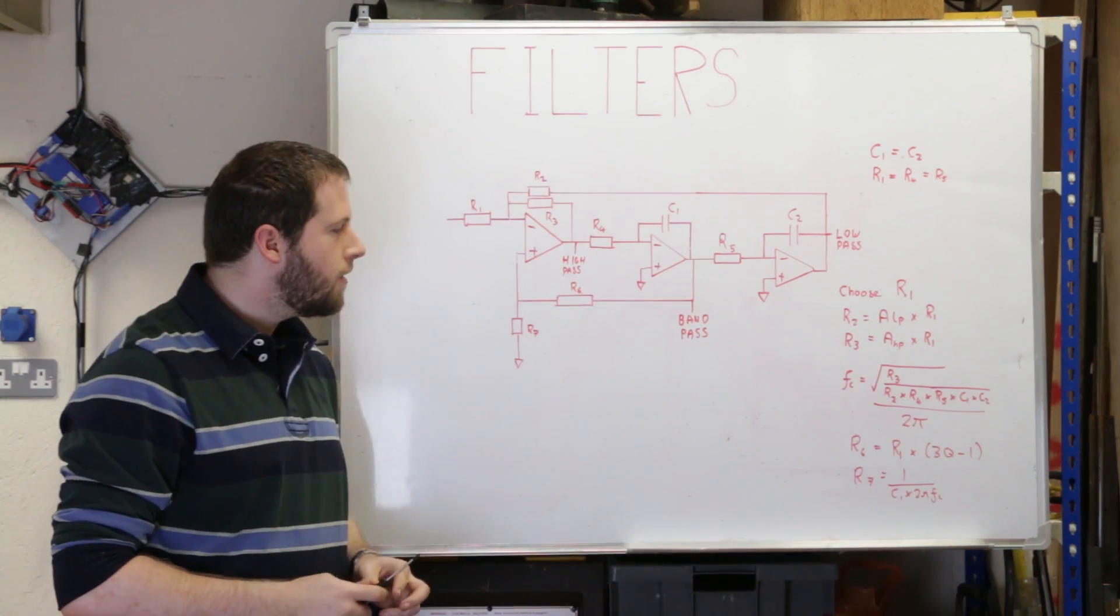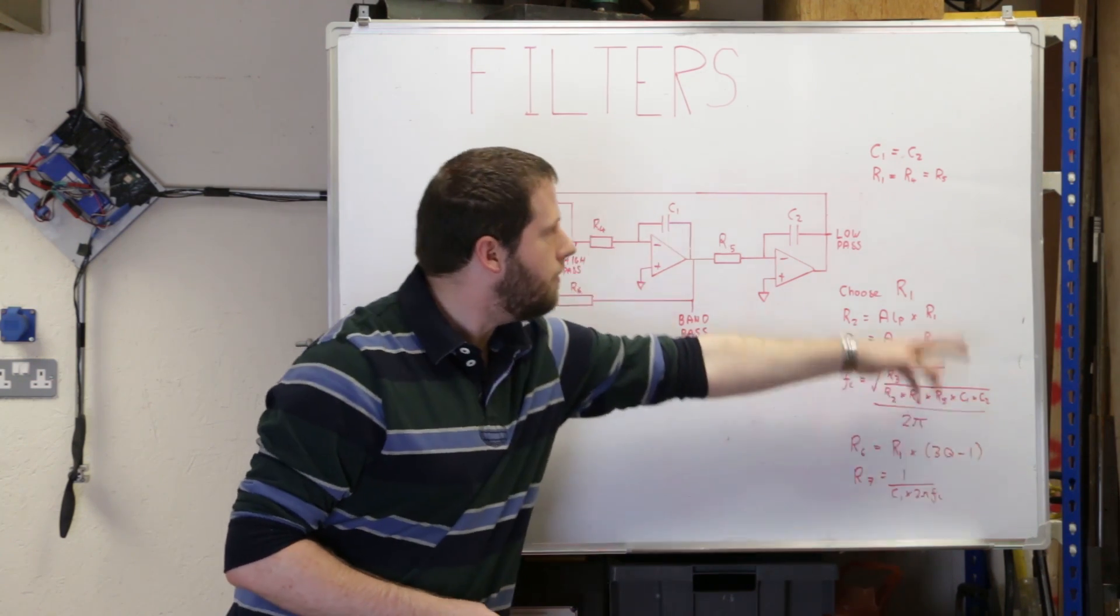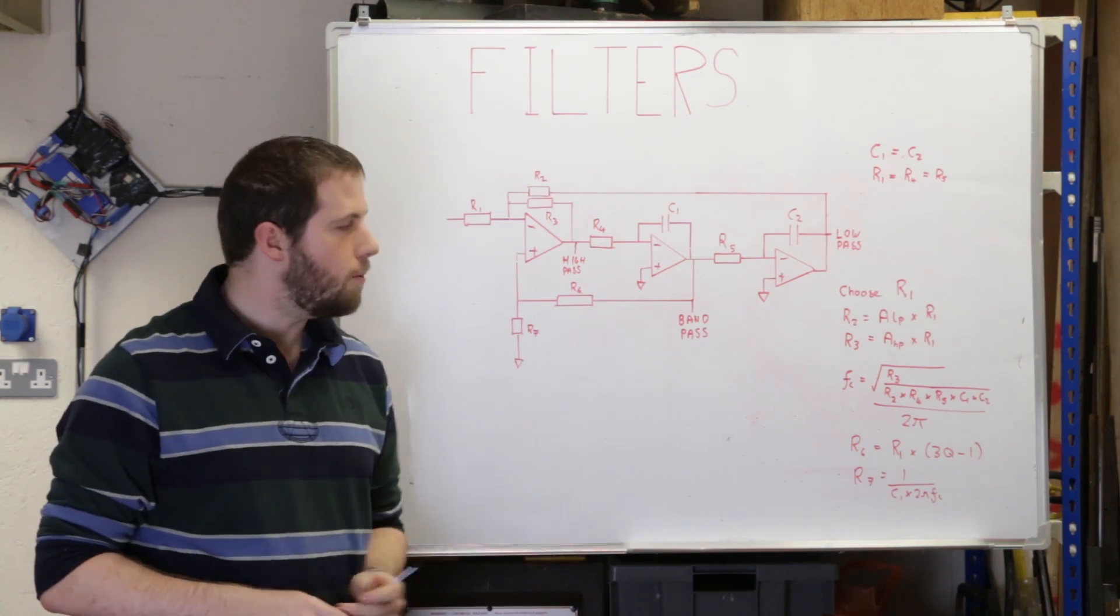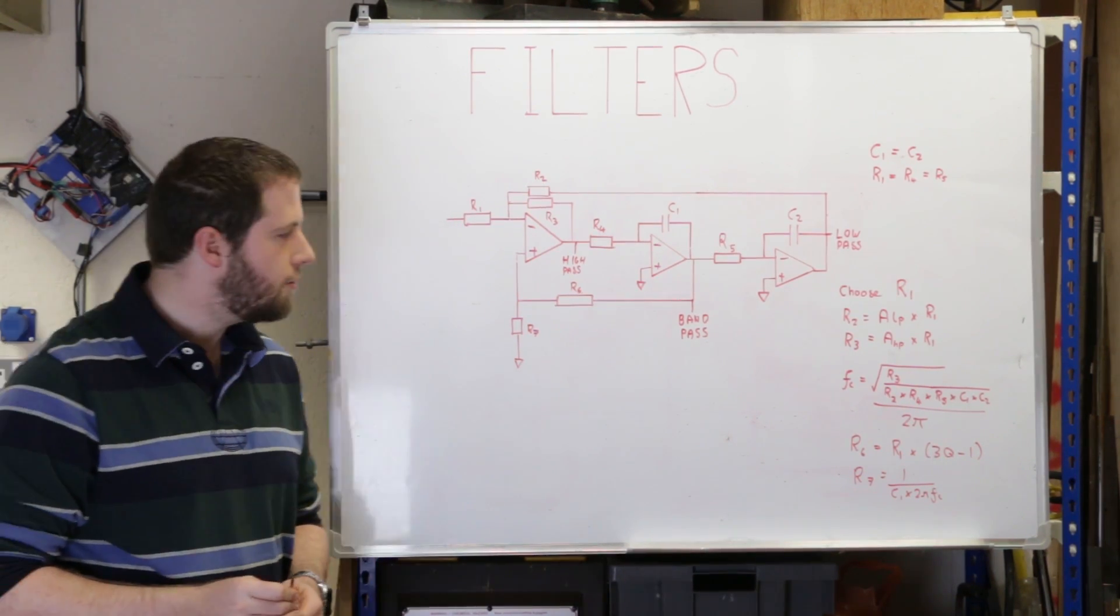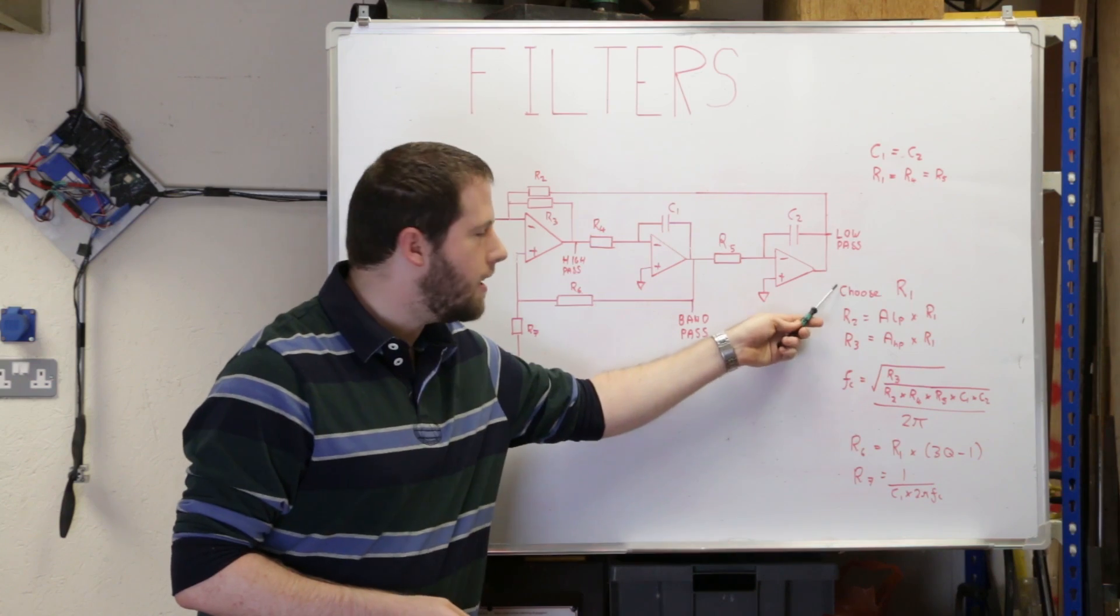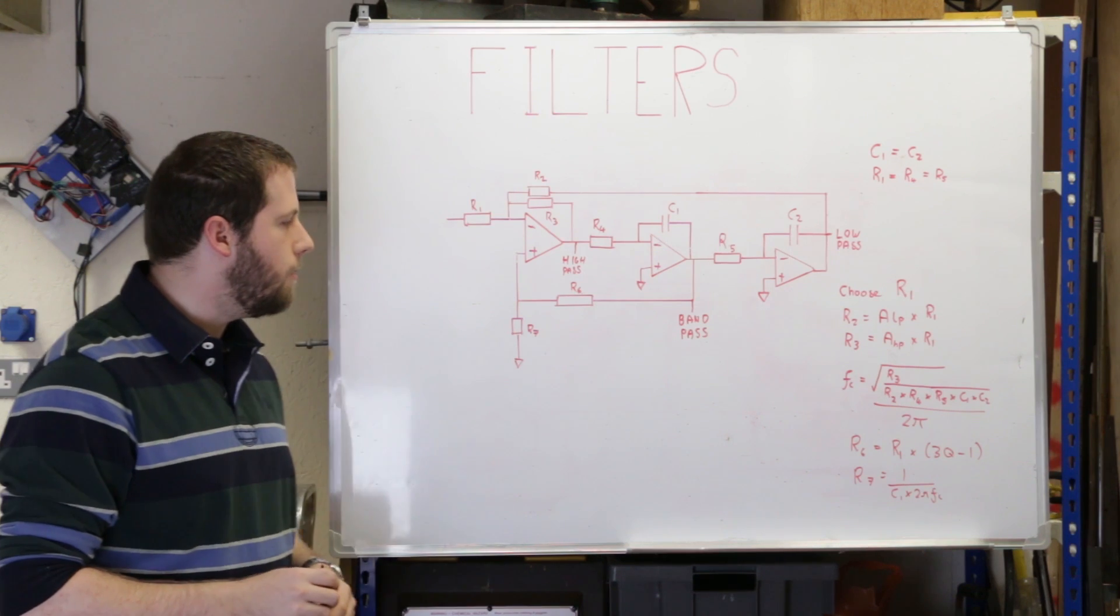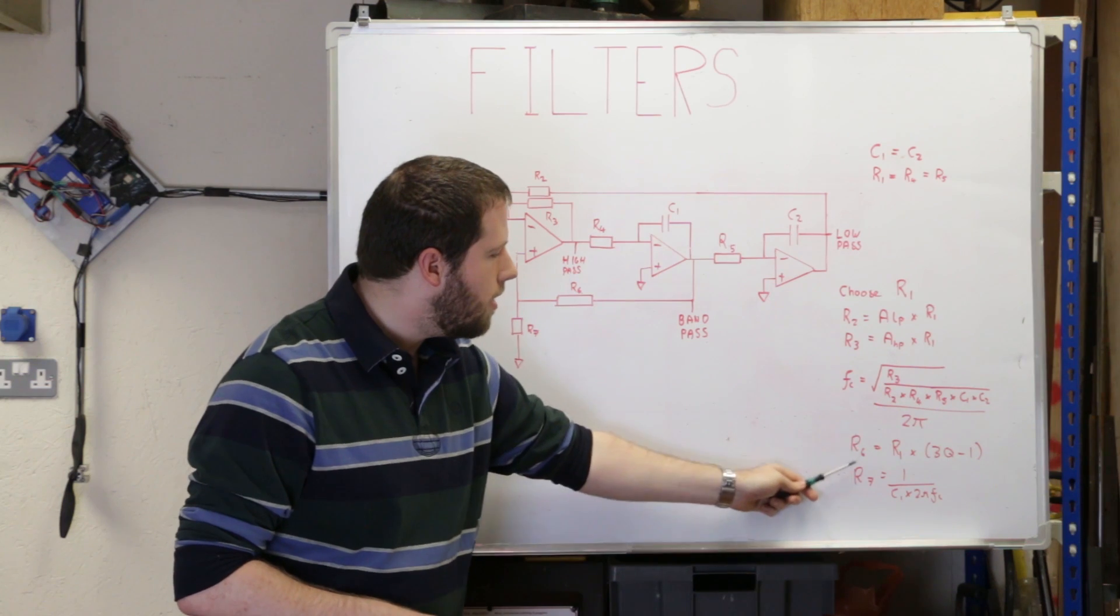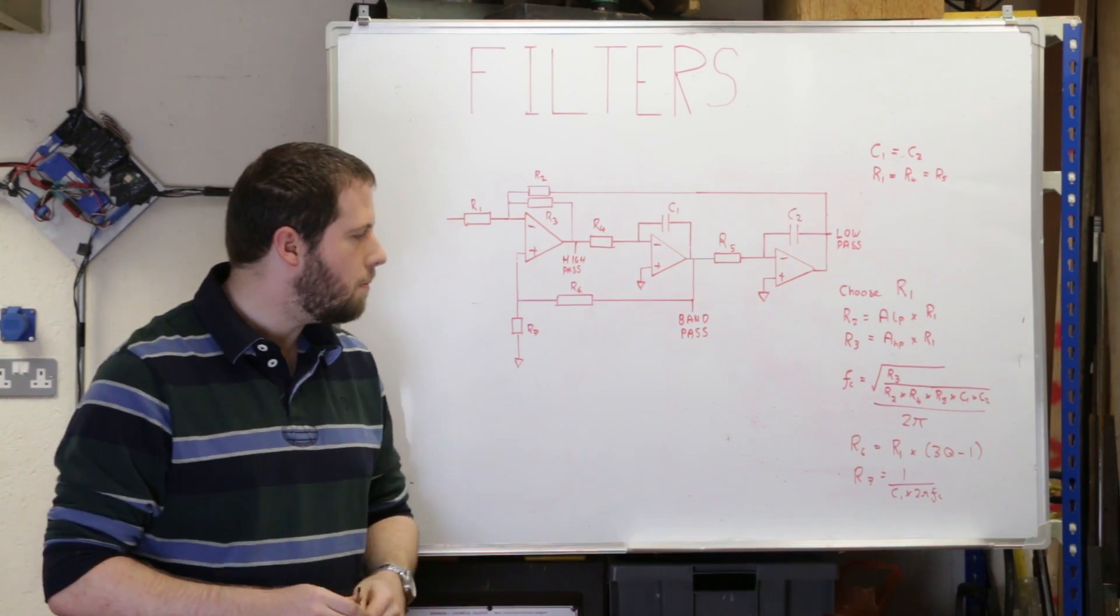With this you can just change your value of C1 and therefore C2 until you get the right cutoff frequency. At this point, if your value of capacitance is really small - if you come up with a value of say four or five picofarads - or really really large, several hundred microfarads, then you can go back to the beginning, change your value of R in the right direction so it brings it into sensible component values. Once you've got your cutoff frequency, your R6 is equal to R1 times by three times the quality factor or Q minus one.